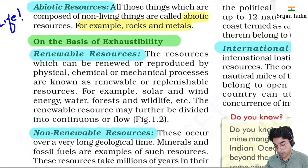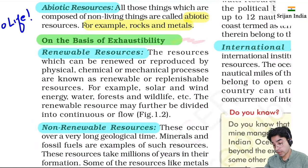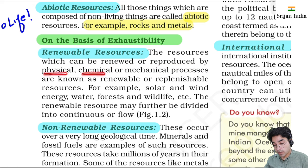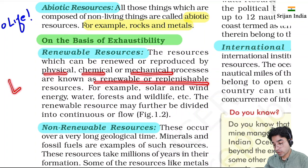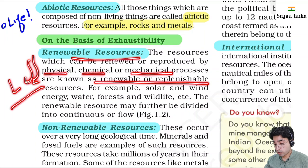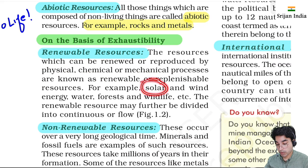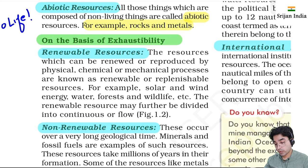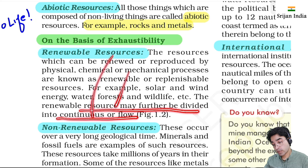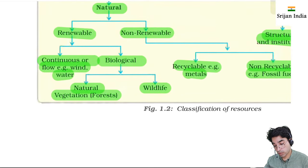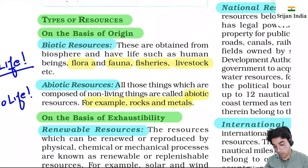The second criteria is exhaustibility - whether it gets exhausted or not. Renewable resources are resources which can be renewed or reproduced by physical, chemical, or mechanical processes - known as renewable or replenishable resources. They are getting used but also renewing continuously. Examples: solar, wind, water, forest, wildlife. Renewable resources are further divided into continuous or flow - like wind and water - and biological.